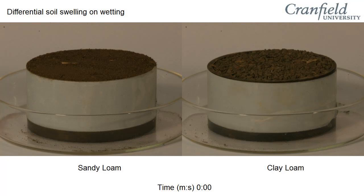The soil on the left is a sandy loam. It is 72% sand and only 12% clay, whereas the soil on the right is a clay loam with 33% sand and 45% clay.